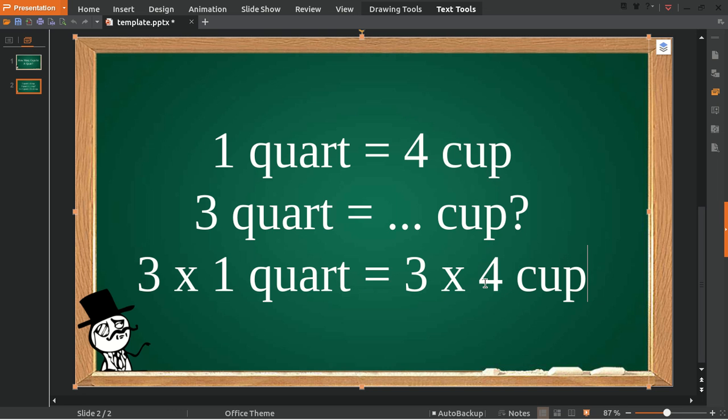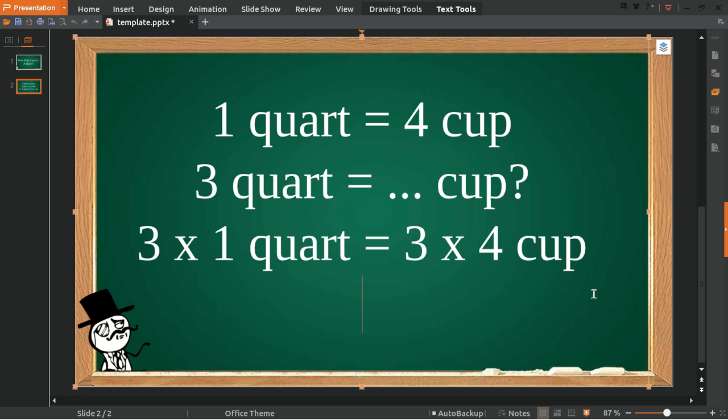Because four cups is equal to one quart. All right, now three quarts is equal to twelve cups. Well, that's the answer to the question.